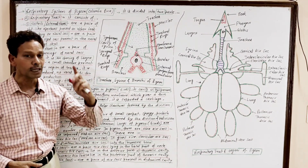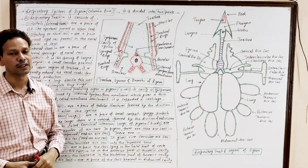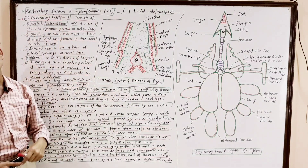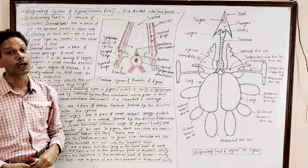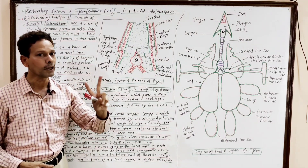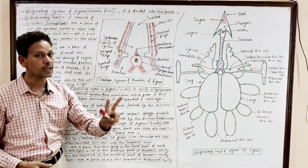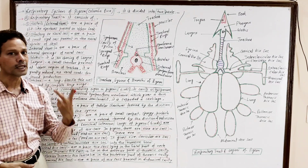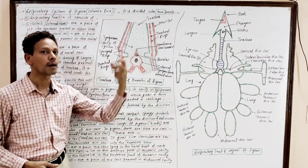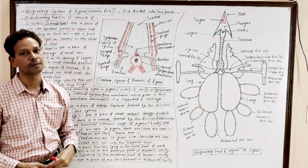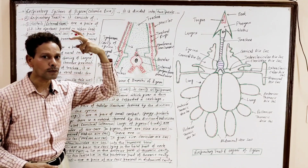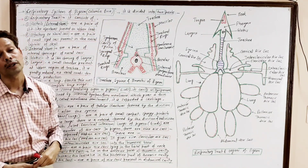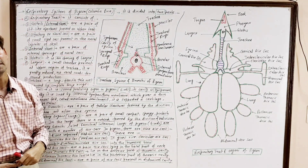The first part is the respiratory tract, and this respiratory tract consists of the following parts. First, a pair of external nares or nostrils — these are simple slit-like apertures present on the upper beak.